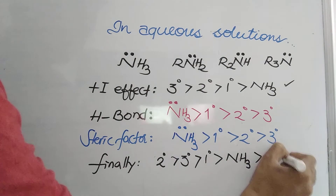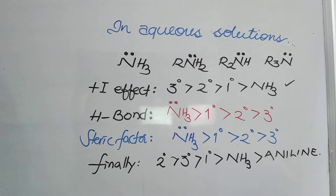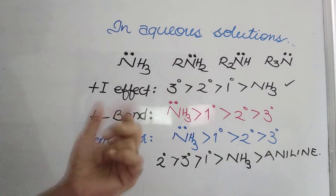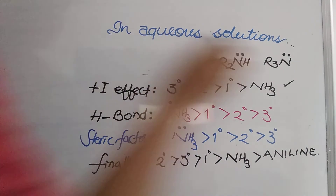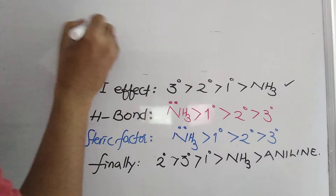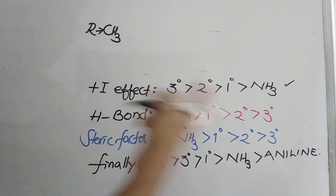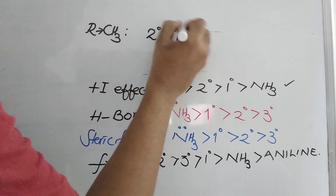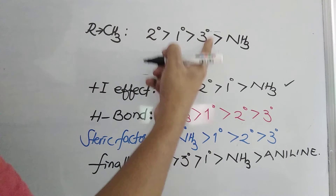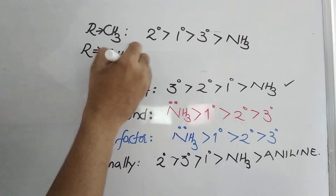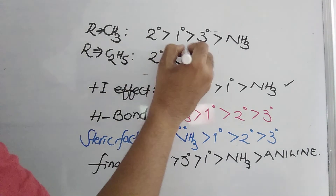The overall basicity order in aqueous solution is: secondary > tertiary > primary > ammonia. Aniline is at the last place and will be discussed separately. If the alkyl group is a methyl group specifically, the order is: secondary > primary > tertiary > ammonia. If the alkyl group is ethyl or higher (propyl, butyl), the order is: secondary > tertiary > primary > ammonia.